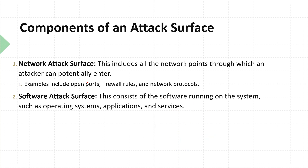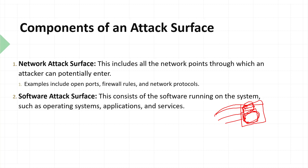Next is the software attack surface. A web server running with three vulnerabilities gives an attacker three opportunities to exploit. This consists of software running on the system such as OS, applications, and services. Even if the server is protected, the web application running on it could have a bug, or a downloaded third-party library or framework could introduce a vulnerability — that's the software attack surface.